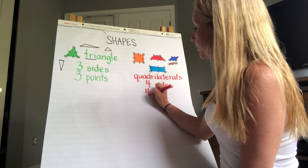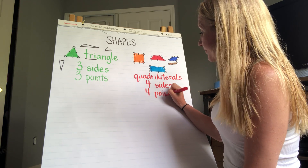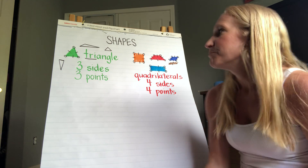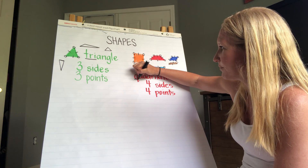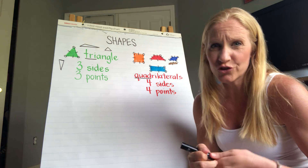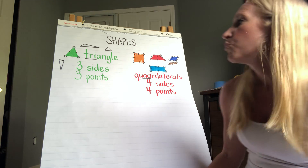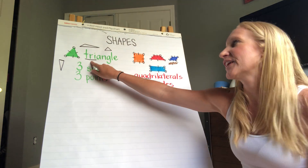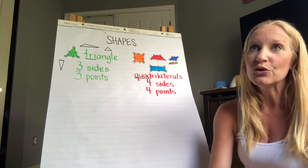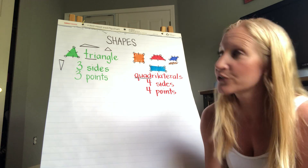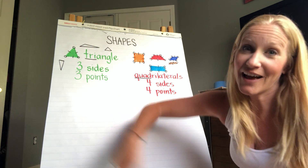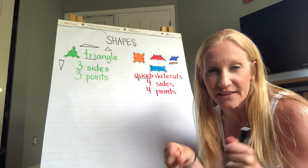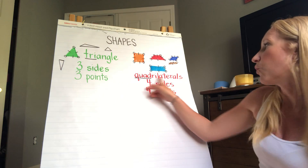In the word triangle, 'tri' means three — that's why it's called a triangle. Over here these are called quadrilaterals because 'quad' means four. Math words actually give you hints as to what they mean. You know that a tricycle has three wheels — a triangle has three sides. And if you've heard of people riding quads, they have four wheels — a quadrilateral will have four sides.